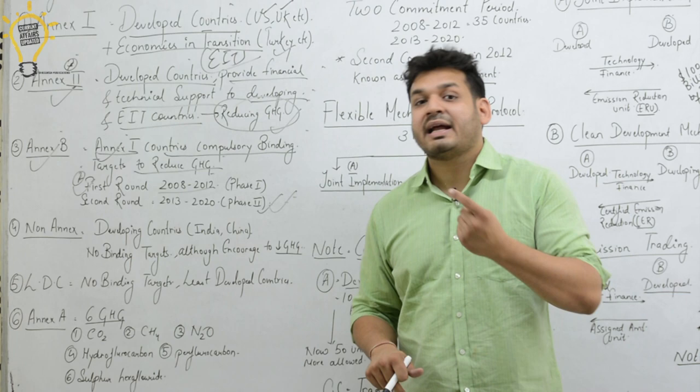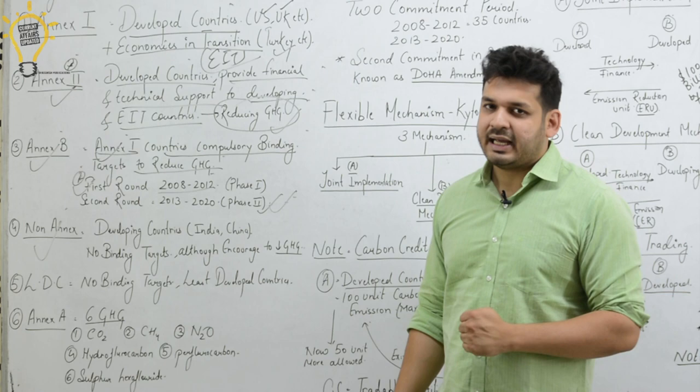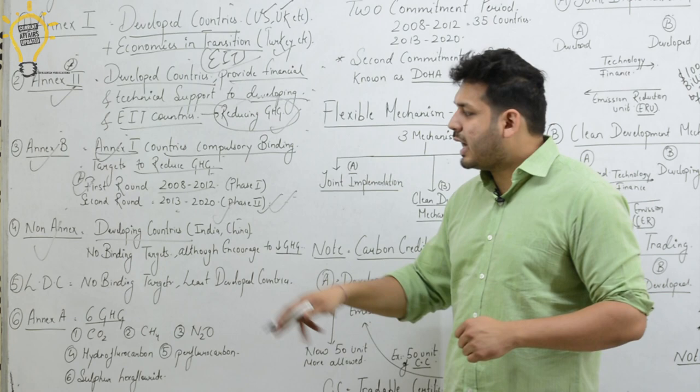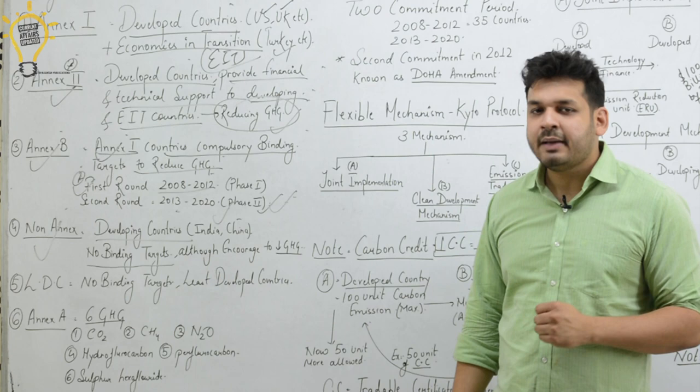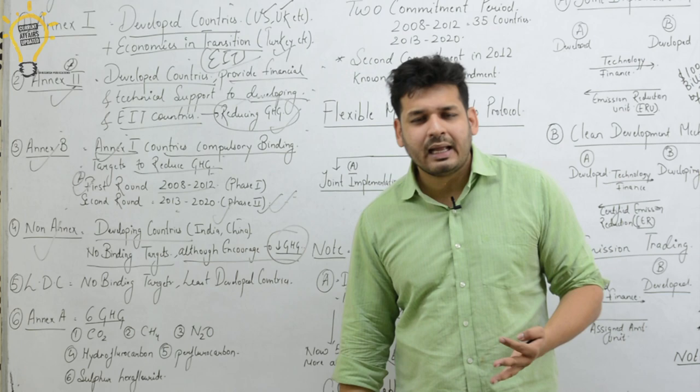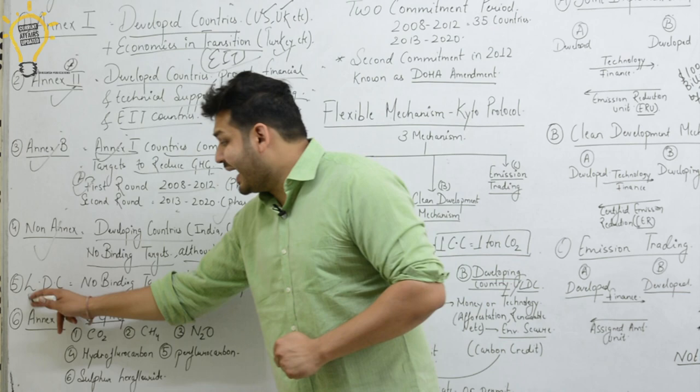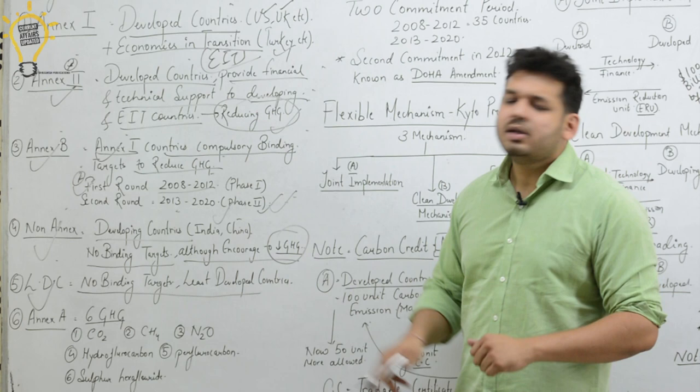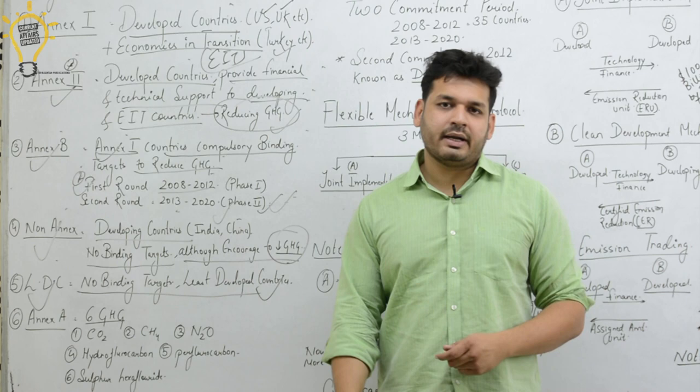Non-Annex developing countries like India and China do not have compulsory binding targets, but they are encouraged to reduce greenhouse gases — they can reduce, but targets are not binding. Least Developed Countries (LDCs) also do not have compulsory binding targets.